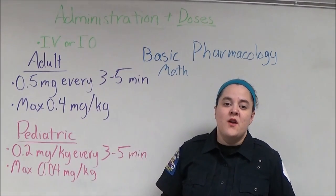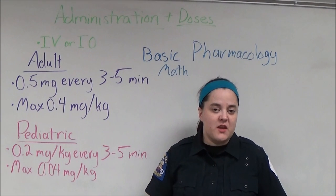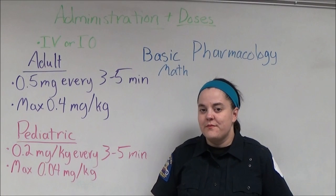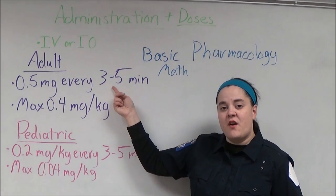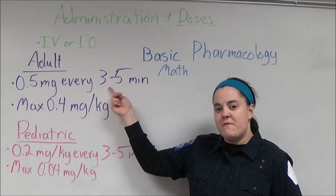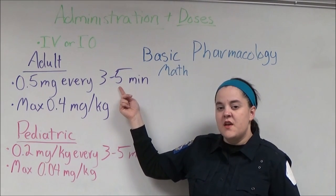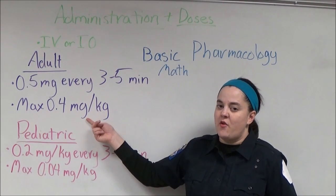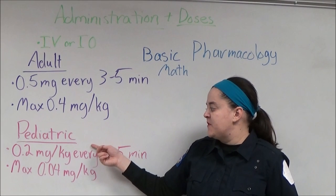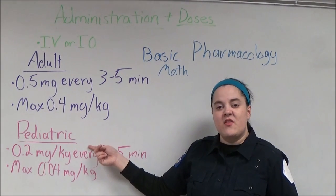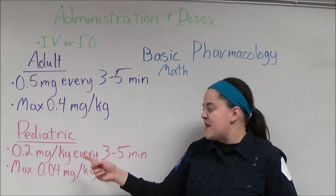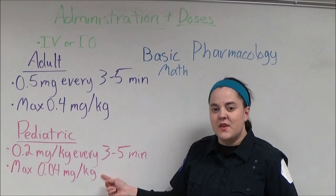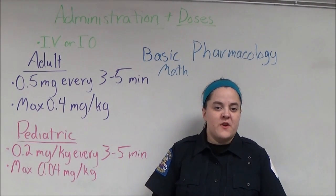However, prior to administering any medication you should check your local protocols first for the right dose and the right route. For adults experiencing bradycardia, I give 0.5 milligrams every three to five minutes, with a maximum dose of 0.4 milligrams per kilogram. For pediatric patients, I give 0.2 milligrams per kilogram every three to five minutes, with a maximum dose of 0.04 milligrams per kilogram.